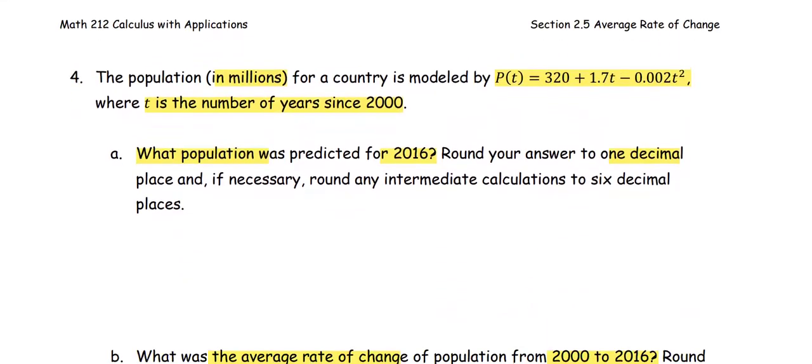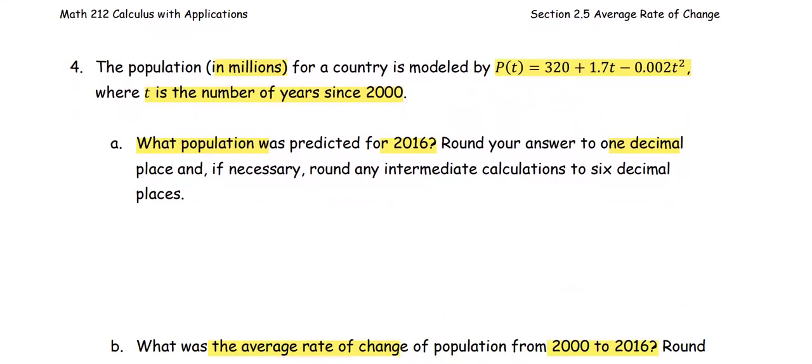Let's get started with Part A. We are going to compute the population or predict the population for the year 2016 based on this model. Since 2000 is the beginning year, the year 2000 represents t=0. That means the year 2016 will be replaced by t=16.